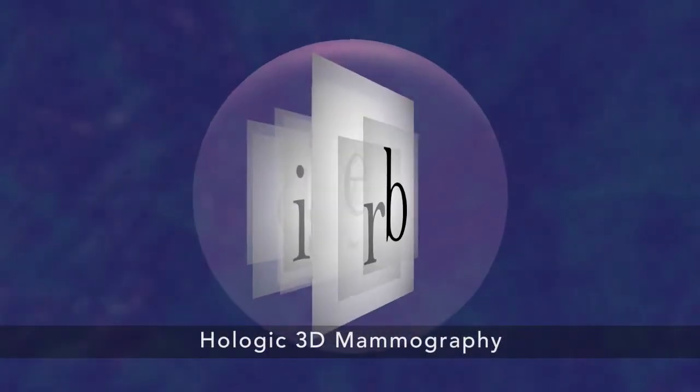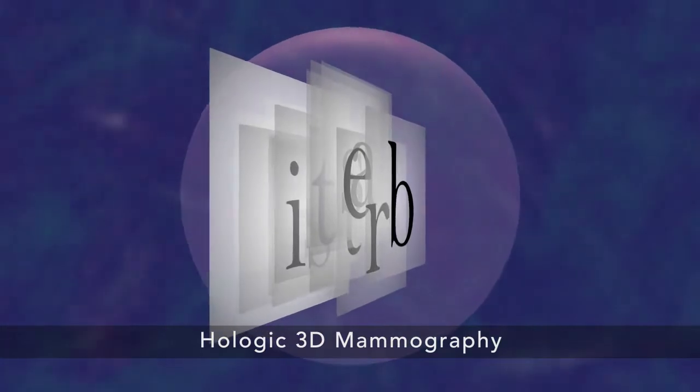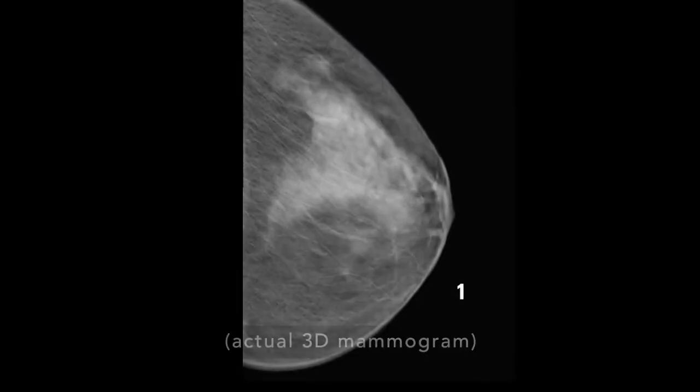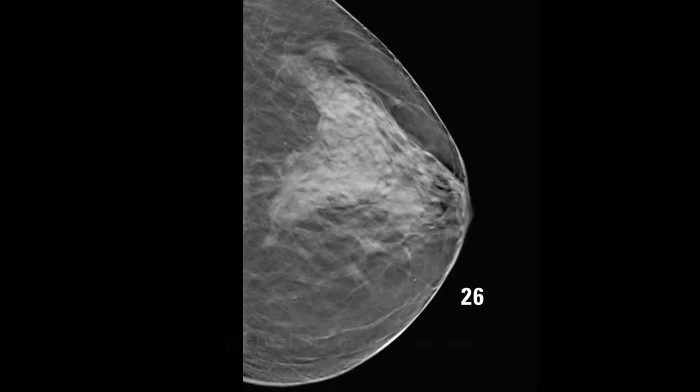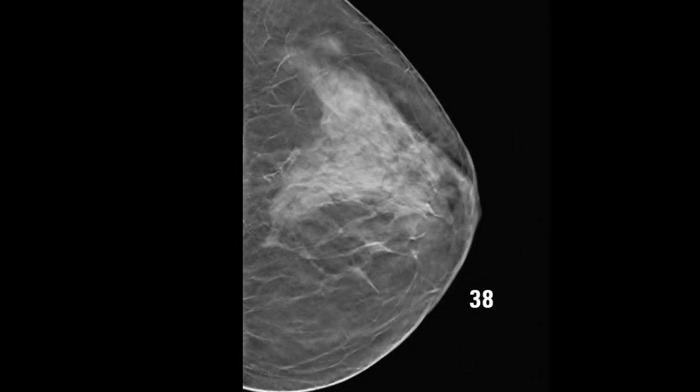3D Mammography is different because it shows your tissue in very thin layers, almost like turning pages in a book. That makes it easier for doctors to see if there's anything to be concerned about. There's less chance for a cancer to hide behind overlapping tissue.